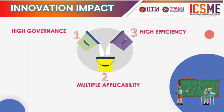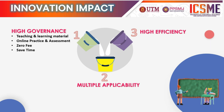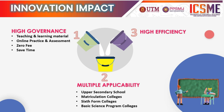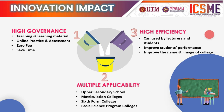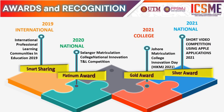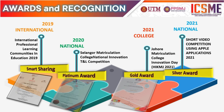The impacts of this innovation can be seen in three main parts. First, high governance: it can be used as teaching and learning materials, a self-learning tool, online practice, and assessment. Most importantly, it is free and easy to access with any digital device. Second, multiple applicability: all the innovative materials can be used by lecturers and students from upper secondary school, matriculation colleges, sixth form colleges, basic science programs, and colleges as a teaching and learning aid. Third, high efficiency: the innovation not only can improve students' results but also the name and image of the college. These innovations have won four awards since 2019: Smart Sharing, Platinum Award, Gold Award, and Silver Award.